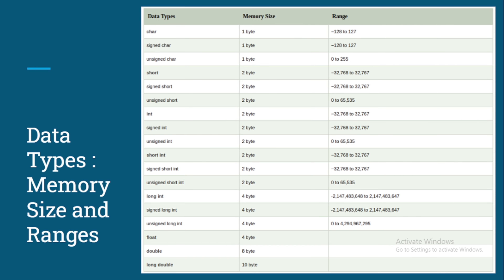Here is a very important formula. You do not need to memorize all these ranges. If you remember the memory size of a data type, you can easily calculate its range. For example, char has one byte — that is eight bits — so two raised to the power eight gives you the unsigned range. Two to the power eight equals 256, so the unsigned range of char is 0 to 255.